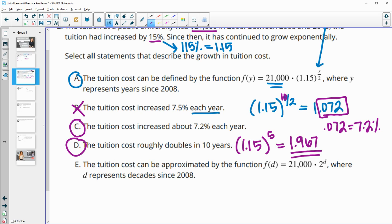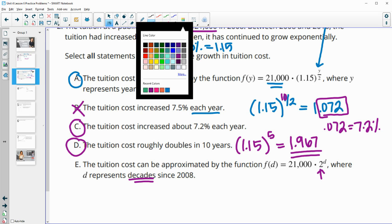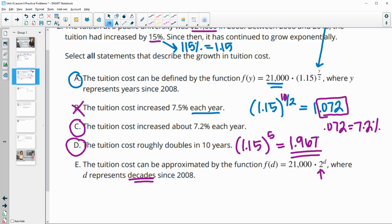And then the tuition cost can be approximated by this function where D represents decades. So now they just did a growth factor of two, which is what we just looked at is every decade it about doubles. So they just put this growth factor of two in per decade. So this one would be true as well.